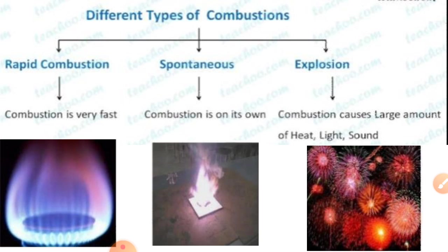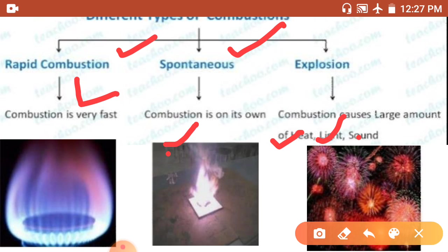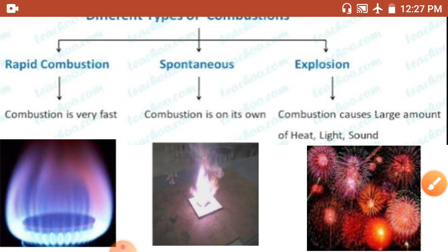There are three types of combustion. First is rapid combustion — it is very fast. Second is spontaneous combustion — combustion that occurs on its own. Third is explosion, which produces a large amount of heat, light, and sound.